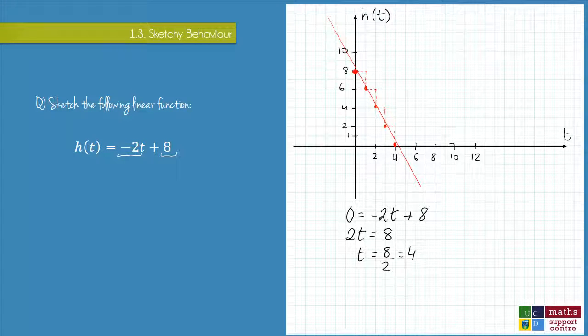So the t-intercept is 4, and we can see that I already have that point marked on the graph. But my point is, we don't need to use the slope method when sketching.